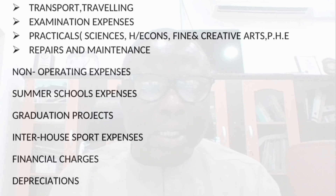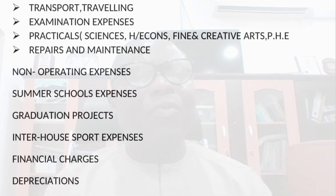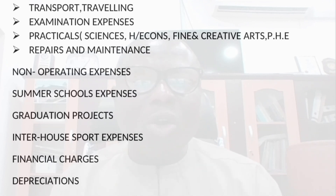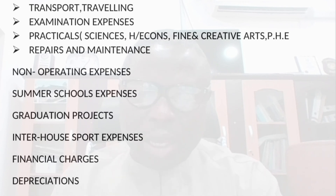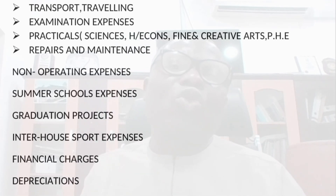We have transport and traveling expenses, examination fees, fees and money spent on practical sciences, economics, fine arts, and home economics. Repairs and maintenance are also part of what we spend money on. Before we wrap up this section, let's look at the non-operating expenses.